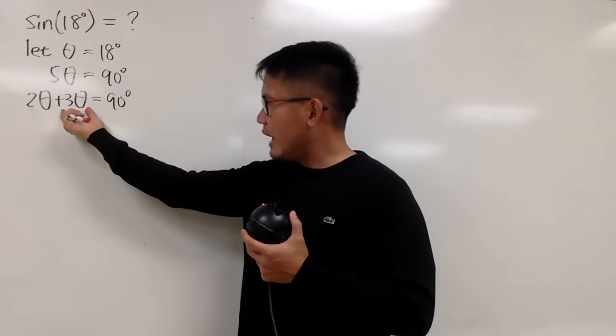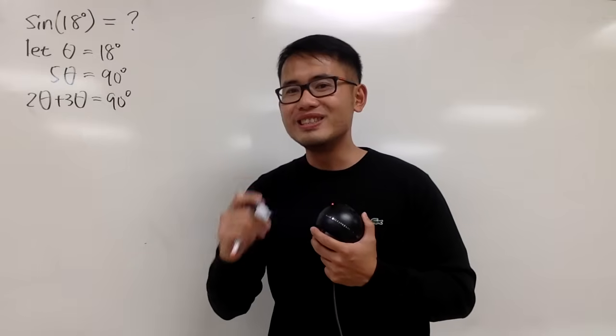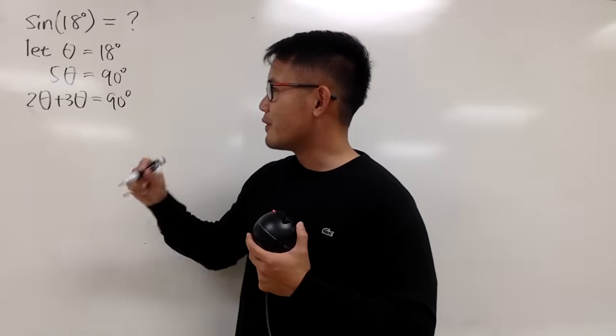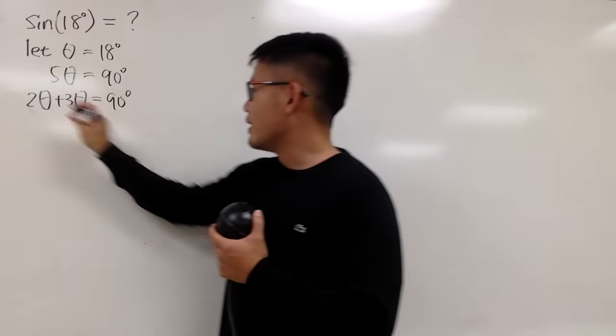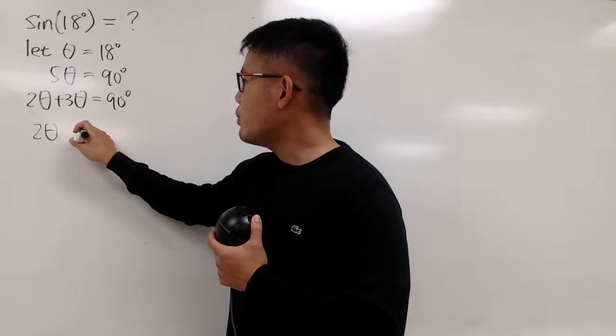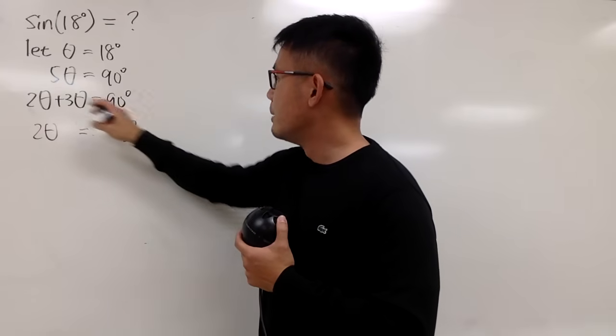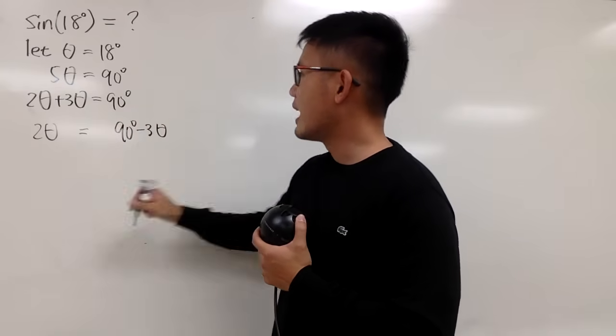I want to move the angle to be on the right-hand side, so that I can actually avoid using the angle sum formula for sine. So, let me just say we have 2 theta, that would be equal to 90 degrees minus 3 theta.